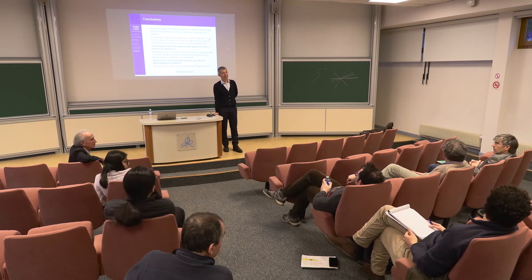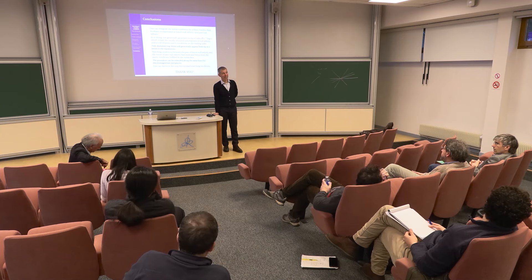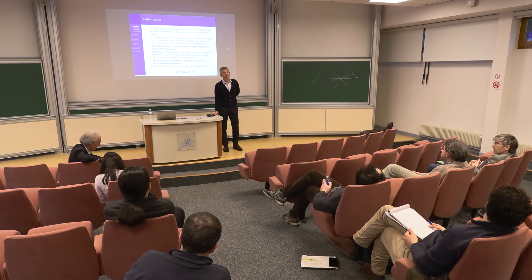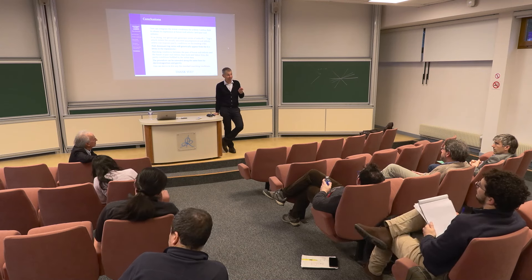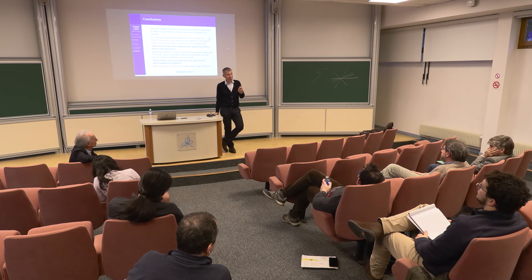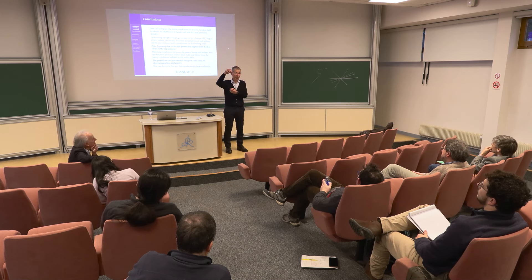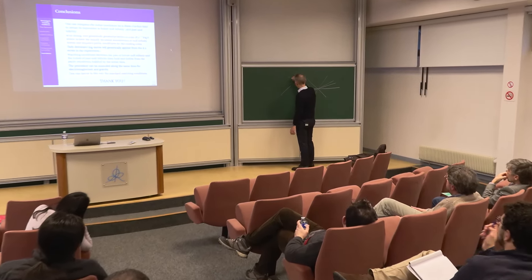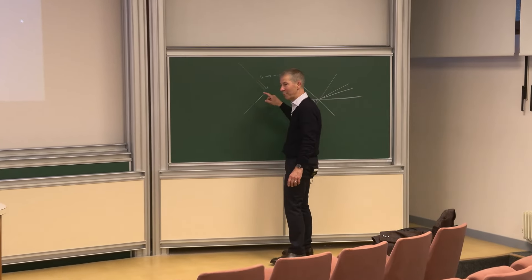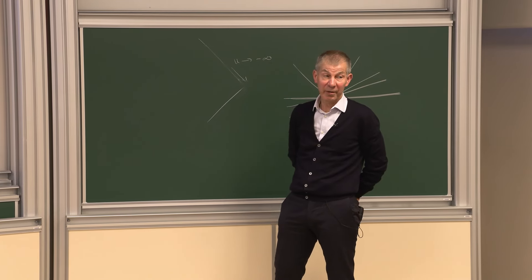Question: did you do the matching between past and future null infinity with the alternate parity conditions? Yes — that's important for quantities like the shear, which is not invariant under large diffeomorphisms. We can justify the assumptions that people made: the limit of c as u goes to minus infinity is antipodally related to its limit as v goes to plus infinity, which was one of the conditions assumed by Strominger to have conservation of the BMS charges.